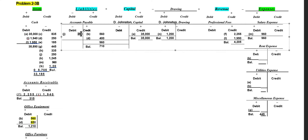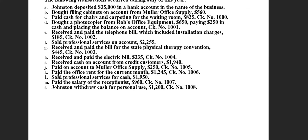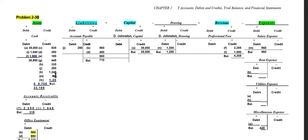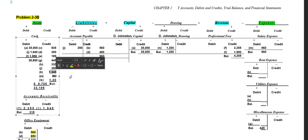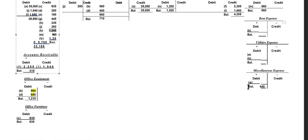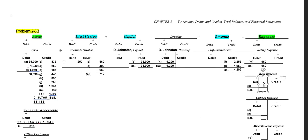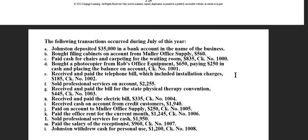We paid the office rent for the current month — $1,245. We are paying for the use of the office, so that is an expense, and we are paying with cash. We credit cash $1,245 to decrease the asset. We debit rent expense $1,245 to increase the expense, since expenses are increased with debits.